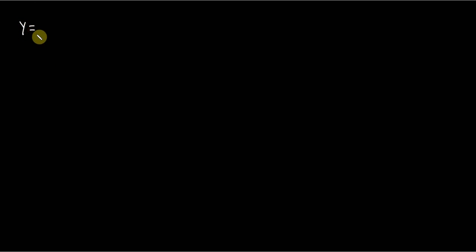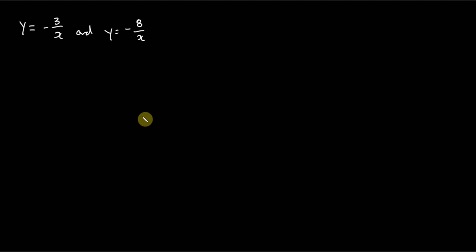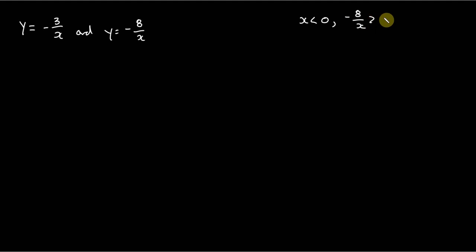But what if we are given something a little bit different, like y equals negative 3 over x and y equals negative 8 over x? If we just want to sketch this, we can say this is type 2 clearly, because it's negative - type 2 is when k is less than 0. And so for when x is less than 0, negative 8 over x is going to be greater than negative 3 over x, which is to say that negative 8 over x is going to be on top.